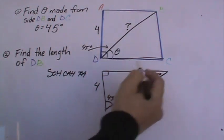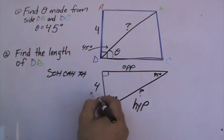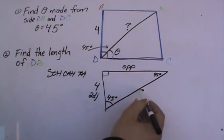This is going to be opposite your 45-degree angle, which means this will be your adjacent side to your 45-degree angle.